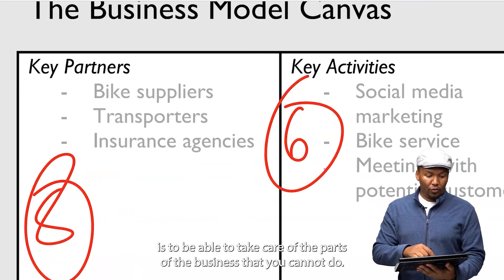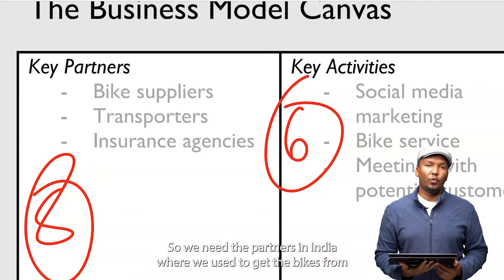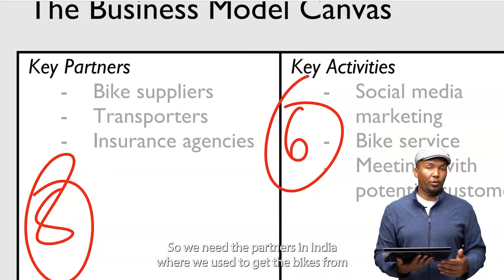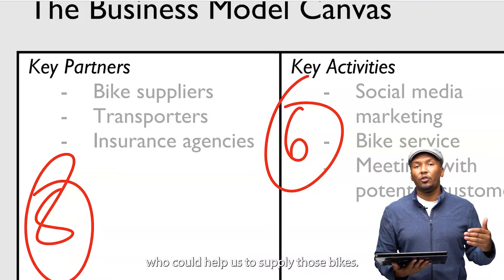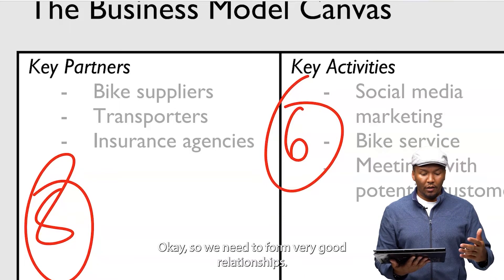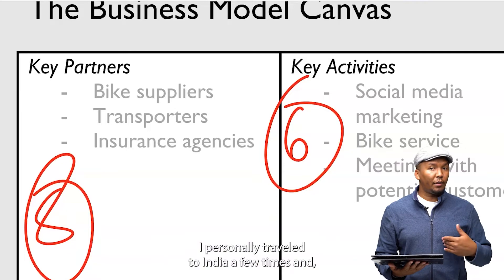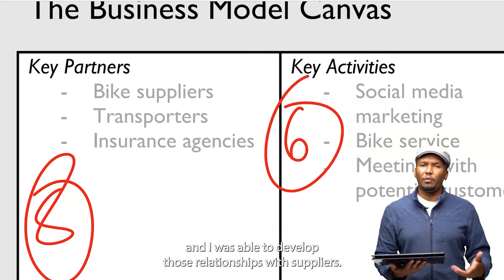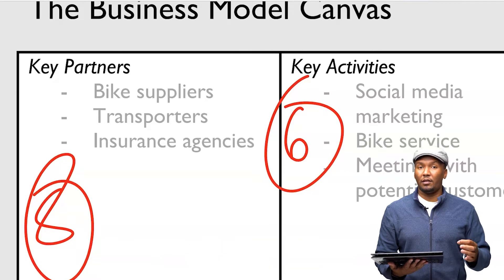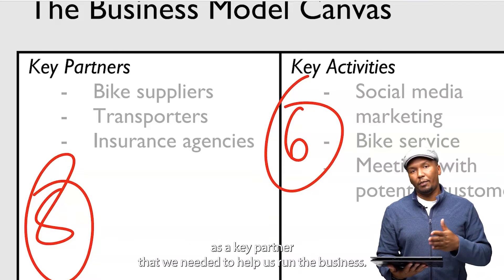For example, we needed suppliers of bikes, so we needed partners in India where we used to get the bikes from, who could help us supply them. We needed to form very good relationships. I personally traveled to India a few times and was able to develop those relationships with suppliers as a key partner that we needed to help us in the business.